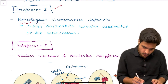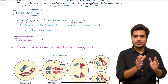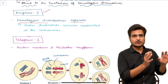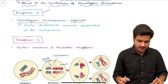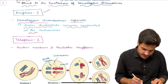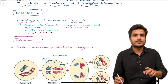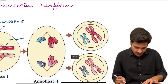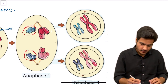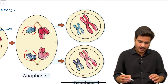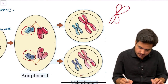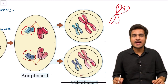In anaphase 1, homologous chromosomes separate. The end result of meiosis 1 is the separation of homologous chromosomes into daughter cells — the pink chromosome to one side and the purple to the other. This occurs in anaphase 1 via spindle fibers, while sister chromatids remain attached at the centromere. Sister chromatids will separate in meiosis 2. Each chromosome still has two chromatids attached at the centromere at this stage.